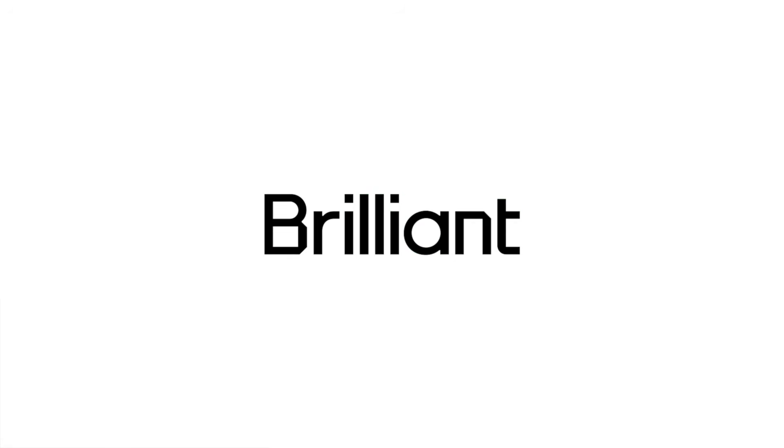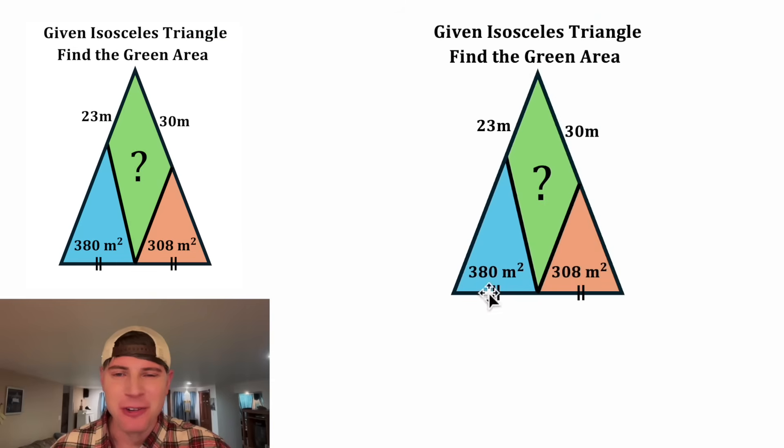This video is sponsored by Brilliance. Hey guys, this looks like a fun one. We're given an isosceles triangle split up into three regions and it wants us to find this green area. We also know this length, this length, and this area and this area. And this is the midpoint of the base.